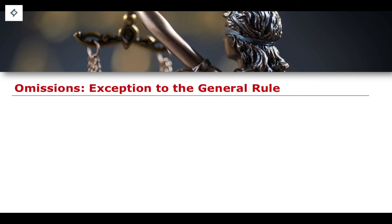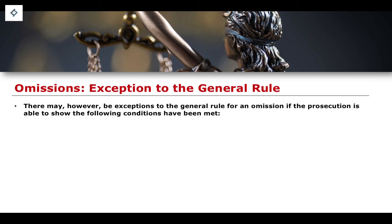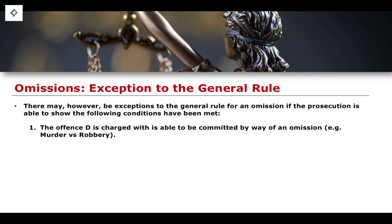However, when we look at the various exceptions to this rule, we can see where the bar is set for this area of law. There are exceptions such that a prosecution may be able to show criminal liability for a failure to act if the following conditions are met. Firstly, it must be shown that the offence in question is capable of being committed by way of an omission. Some offences simply cannot be committed through omissions — robbery, for example, is cited here on the screen. But murder, on the other hand, could be committed by way of omission.